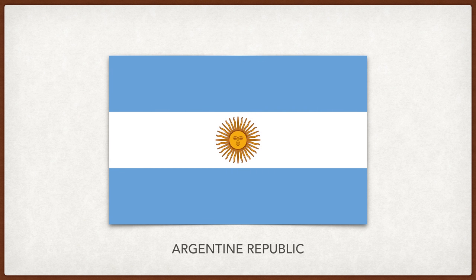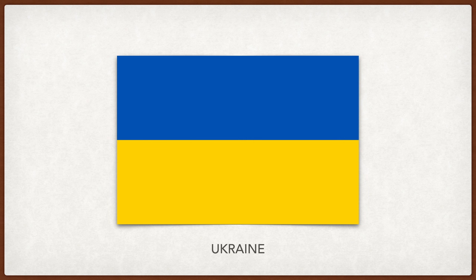Argentina. The colors represent the sky and clouds with the sun in the middle. The sun is called the Sun of May, in reference to the May revolution, which marked the beginning of independence from Spain. Legend has it that when the new government was proclaimed, the sun broke through the clouds and it was perceived as a good omen. Ukraine. The colors have a long history in Ukraine, where they symbolized water and fire. They have come to mean the sky over wheat fields.